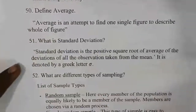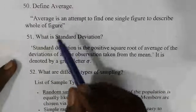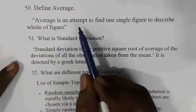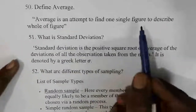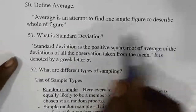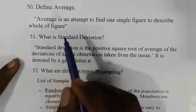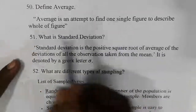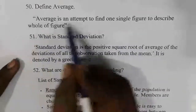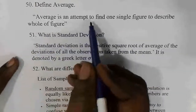What is average? Average is a single number used to represent the whole set of data. It is one figure that describes the entire dataset.